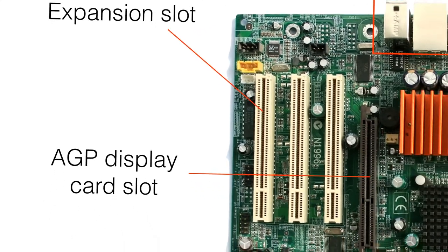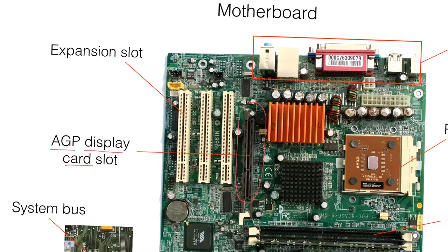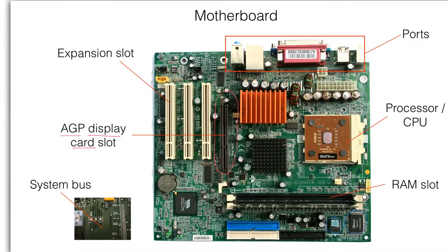Here we have another expansion slot called the AGP display card slot. Usually this slot is in brownish color, and it is mainly for installing the display card. AGP is a common standard for display cards in a personal computer. So as we can see, the motherboard connects the different computer components together using a single board.